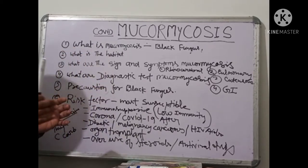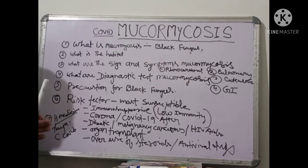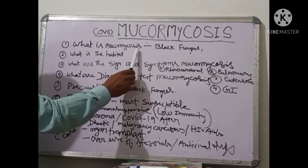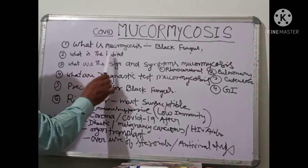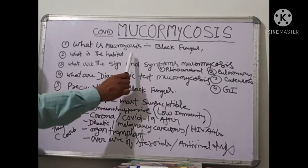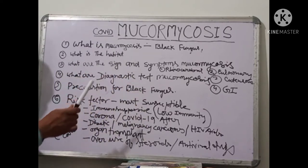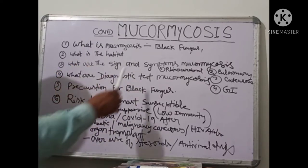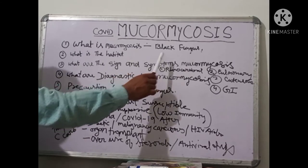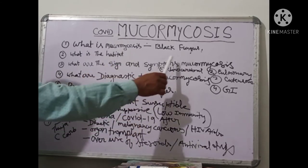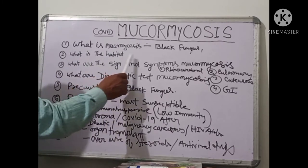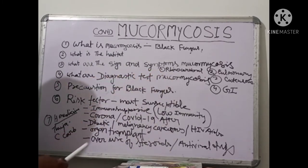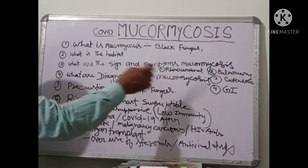This video is very short, so watch till the end. What is mucormycosis? This is black fungus. And what is the habitat of mucormycosis? It lives in soil, the environment, aerosols, and old wooden parts. This black fungus is present in dirty environments.